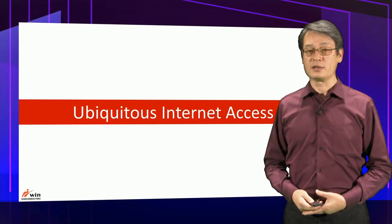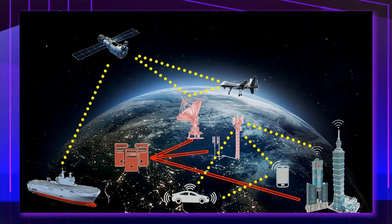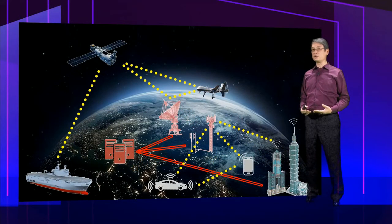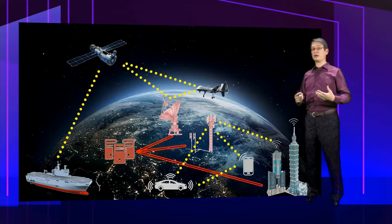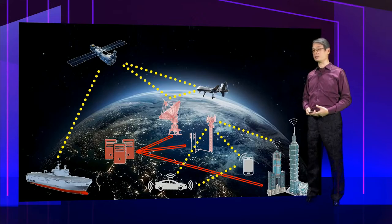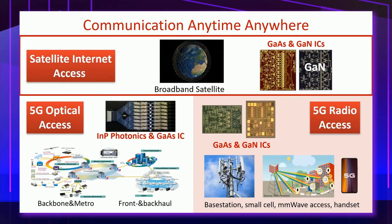The third aspect is ubiquitous internet access. Ubiquitous internet access has become a vision and a must for modern lifestyle — we want to be able to access the internet anytime, anywhere. Compound semiconductors can certainly help realize this vision. This slide shows compound semiconductor devices used pervasively across all networks, including satellite internet access, 5G optical access, and 5G radio access.